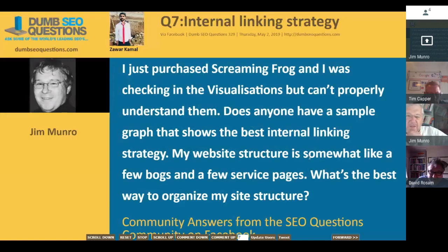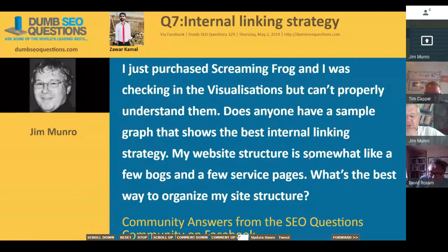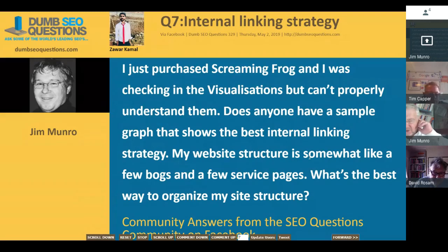Question seven: Zawah Kamal asks about internal linking strategy. He says he just purchased Screaming Frog and is checking the visualizations but can't properly understand them. He asks if anyone has a sample graph showing the best internal linking strategy. His website structure has a few blogs and a few service pages and he wants to know the best way to organize his site structure.